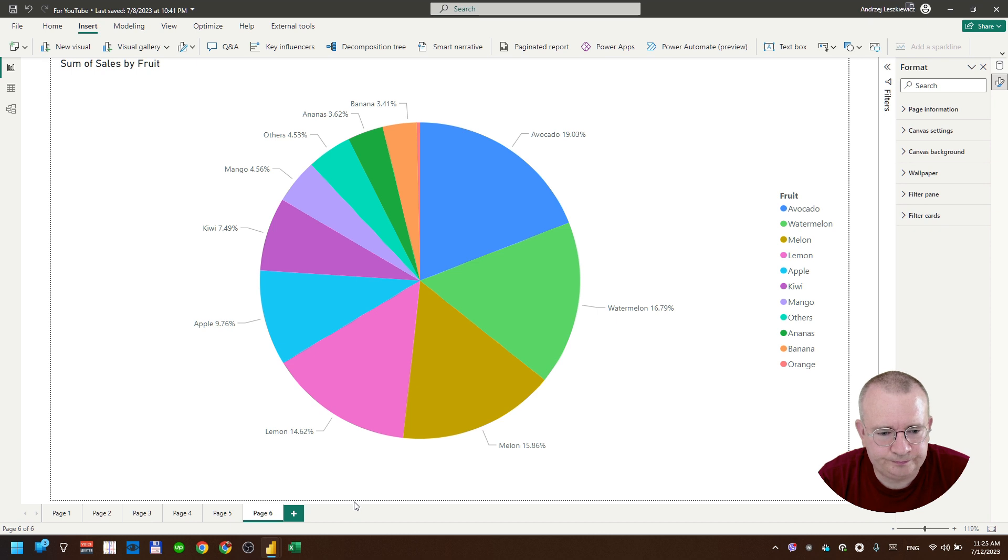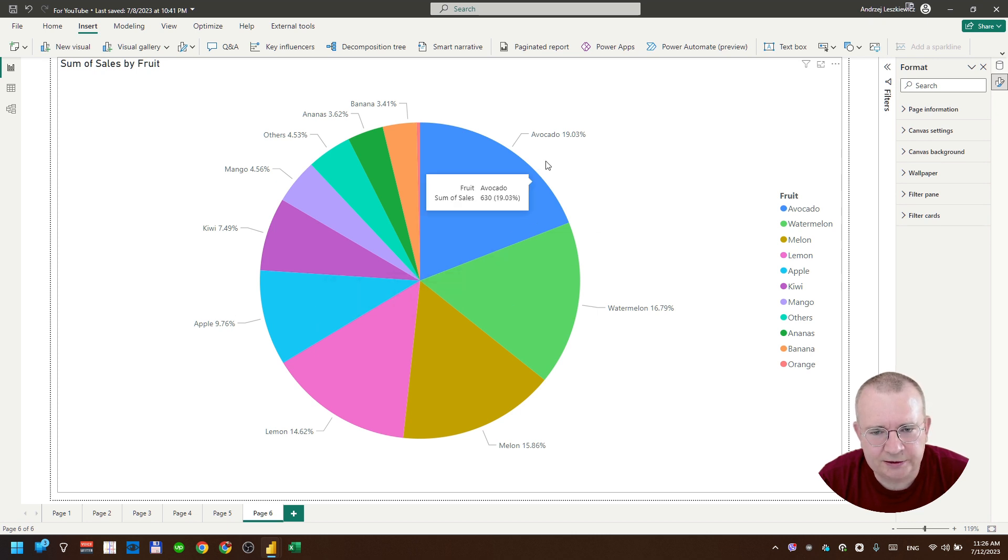What we can do to make this chart better? First of all, we need to get rid of so many colors. Let me explain what is the problem with all these rainbow colors. Will you be able to recall that apple is light blue and avocado is darker blue in let's say 15 minutes after watching this video? I don't think so. There are too many colors.